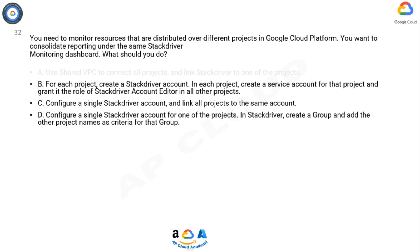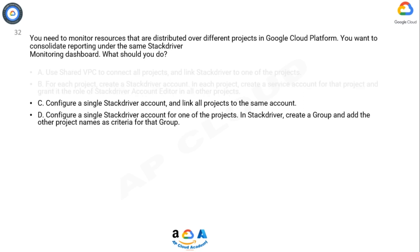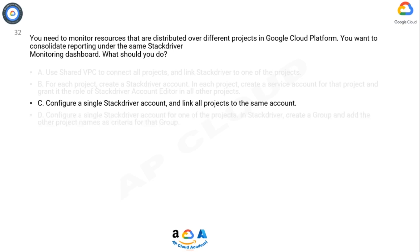As the question says, resources are spread across projects. Option C is correct as it correctly creates one host project and links all other projects to the host project. Option D is incorrect as to group resources based on project, they have to be linked together first, and there is no mention that this has already been done.